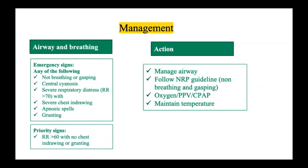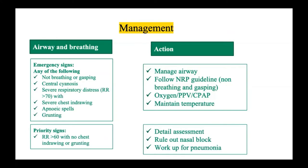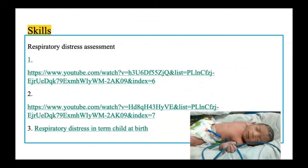Priority/non-emergency signs include a respiratory rate more than 60 but without associated chest indrawing or grunting. In such cases, perform detailed assessment — rule out nasal block, which can also cause noisy breathing and distress, and work up for common bacterial and viral causes of pneumonia, then manage accordingly.